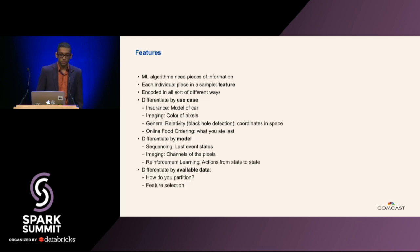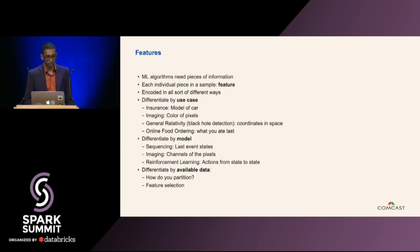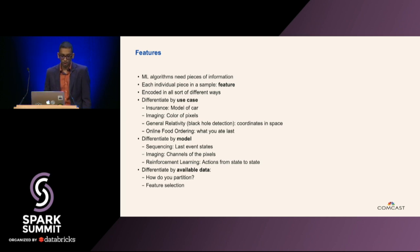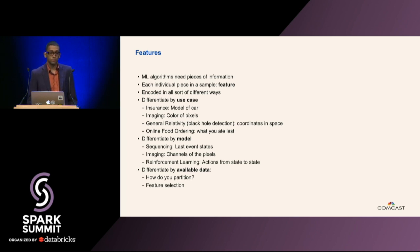So what exactly is a feature? I like to think of a feature as the smallest piece of generic information that still gives you information about a sample. It gets encoded in all sorts of different ways, but it all boils down to some sort of numerical encoding. To give some examples in the use case space — like car insurance — it could be quite useful to know what model of car you have. If you drive a Toyota, you might be somewhat more defensive than somebody driving a sports car. In the image space, the color of pixels is of course necessary.